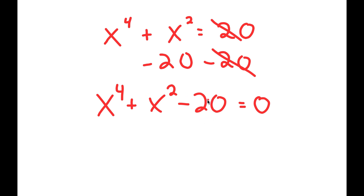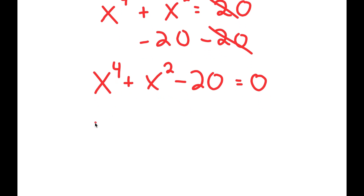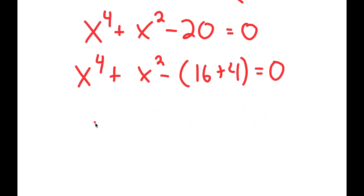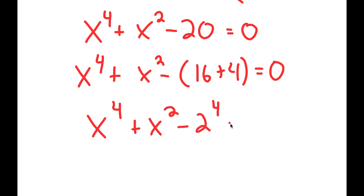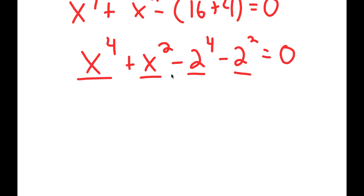Well, we can't factor this out by using the quadratic formula because this is not a quadratic equation. So to solve this, I want to rewrite this as x to the power of 4 plus x squared minus 16 plus 4. I rewrote 20 as 16 plus 4, because negative 16 is the same thing as negative 2 to the power of 4, and negative 4 is the same thing as negative 2 squared. So now notice how I have something in the power of 4 and something in the power of 2, and they're both the same base.